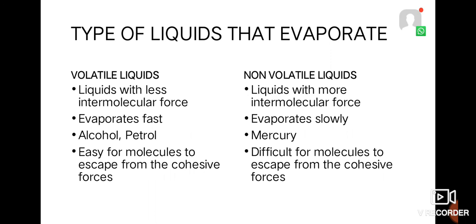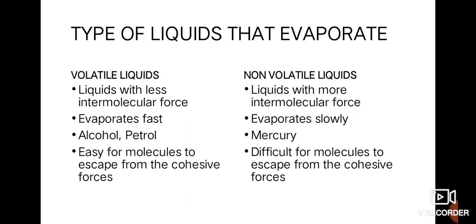Based upon the rate of evaporation, there are two forms of liquid: volatile liquid and non-volatile liquid. Volatile liquids are those with less intermolecular force, whereas non-volatile liquids are those with very high intermolecular force. Volatile liquids evaporate fast, while non-volatile liquids evaporate slowly. For volatile liquids it is easy for molecules to escape from the cohesive forces, but for non-volatile liquids it is pretty much difficult.